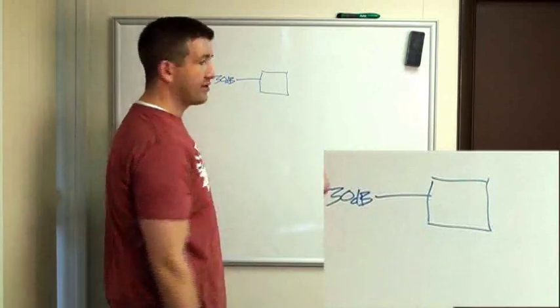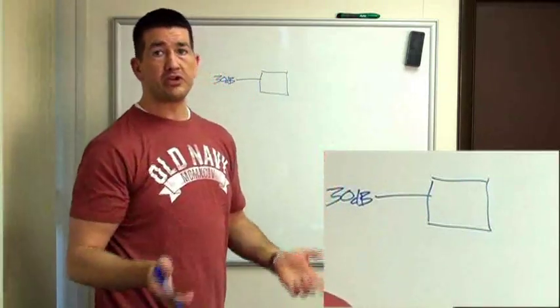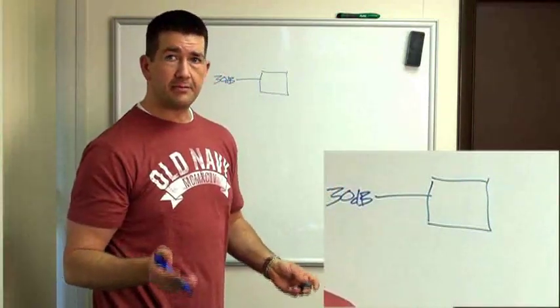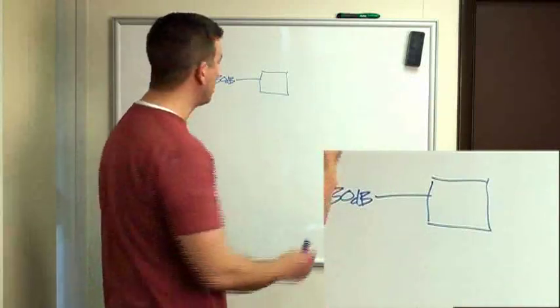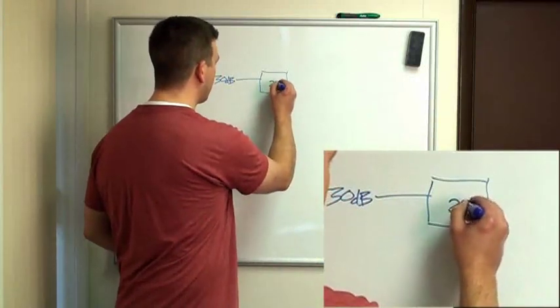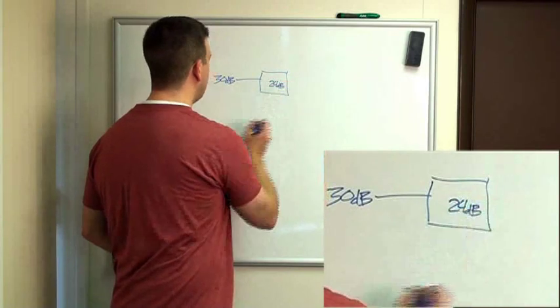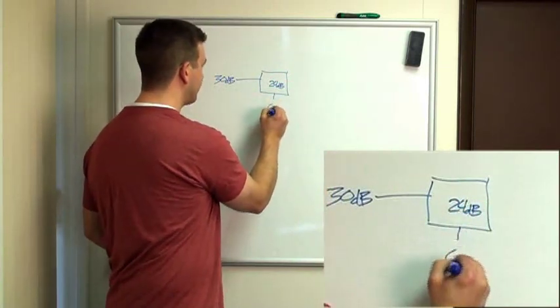So, 7 from 30 is 23. Unfortunately, they don't make a 23 dB tap value so you have to go to the closest one. So, in this case, we'll put a 24. 30 minus 24 gives us 6 dB.